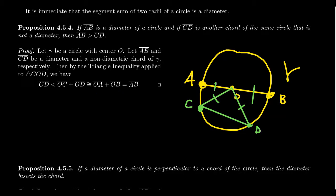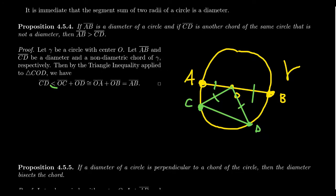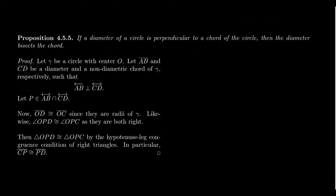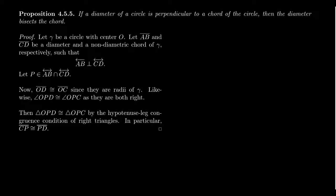If we didn't assume CD was non-diametric — just that it was a chord — the triangle inequality gives us less than or equal to. Nonetheless, we've shown every chord is less than or equal to a diameter, and equality is only obtained when the chord is itself a diameter. Therefore diameters are the largest chords of circles.